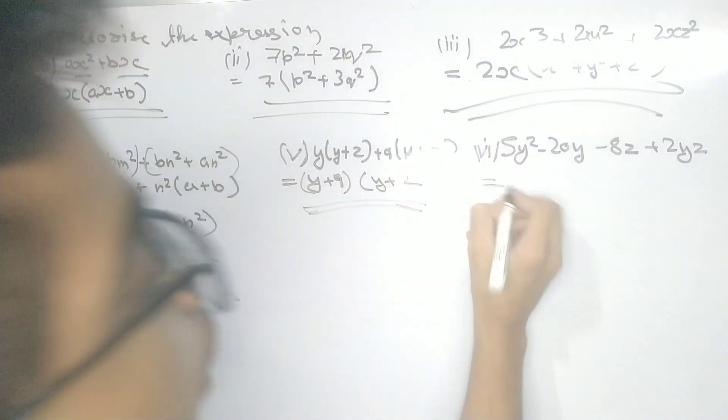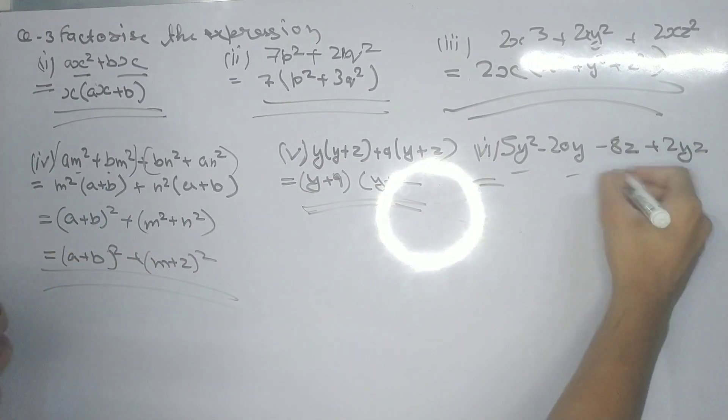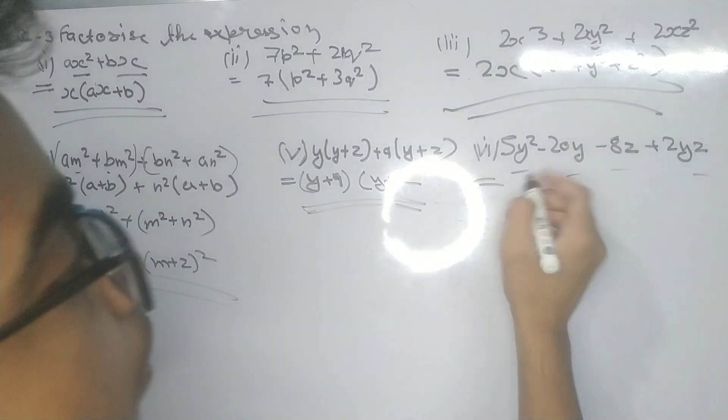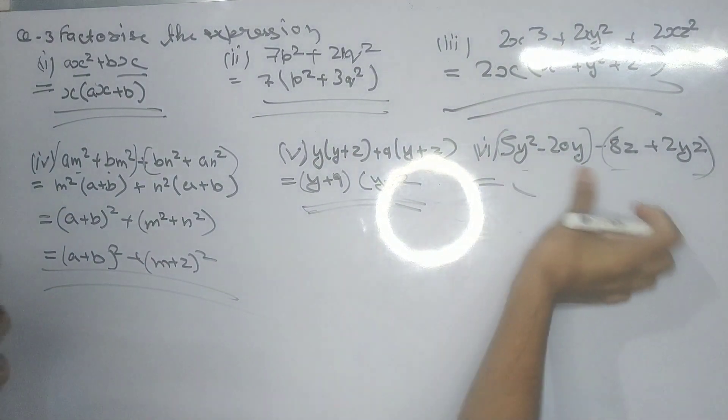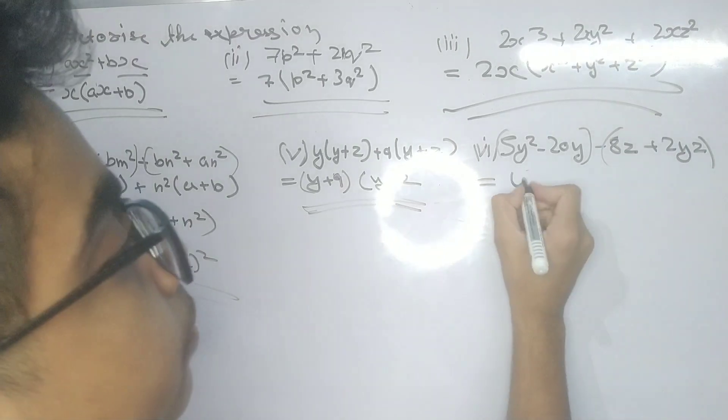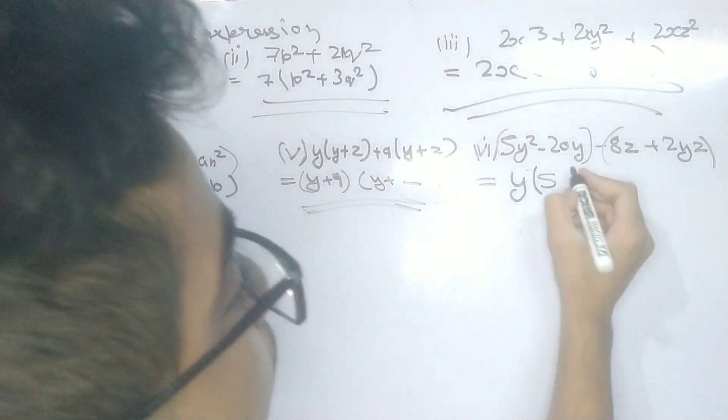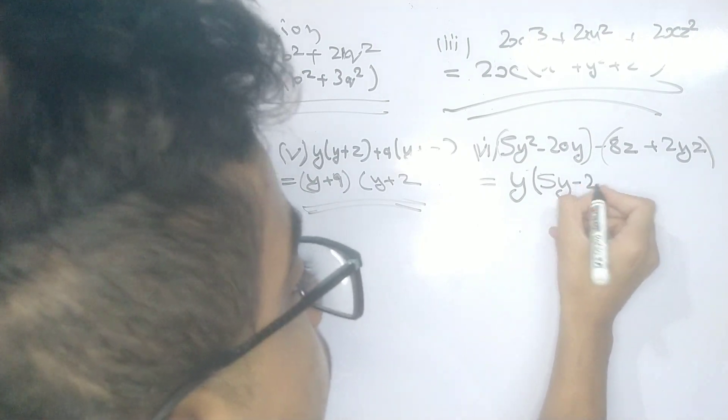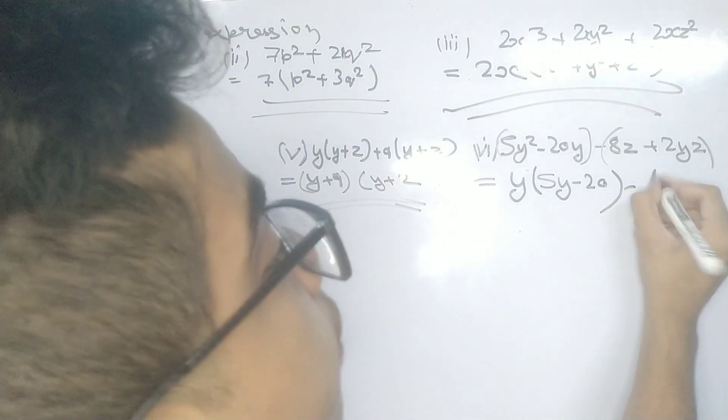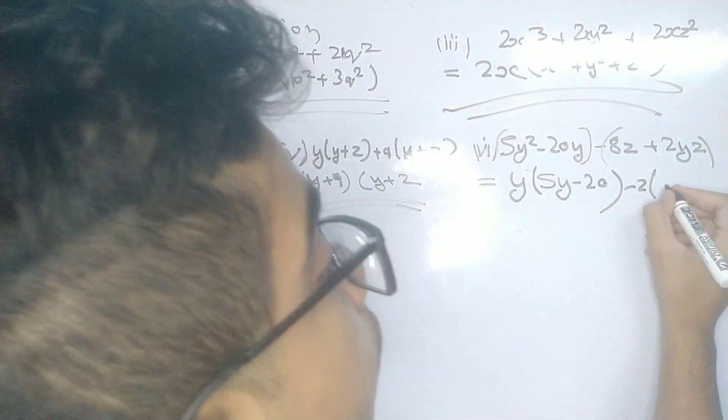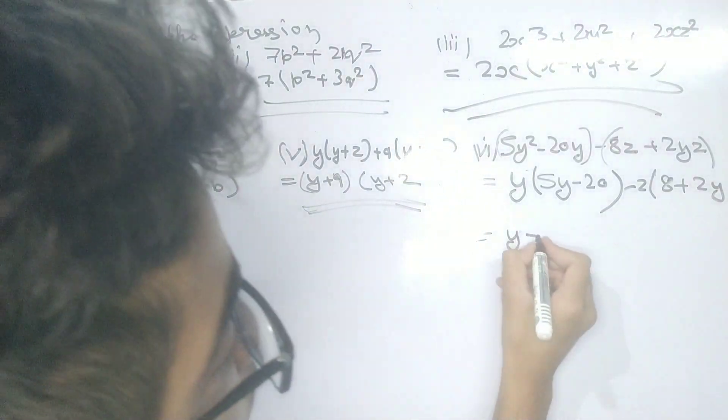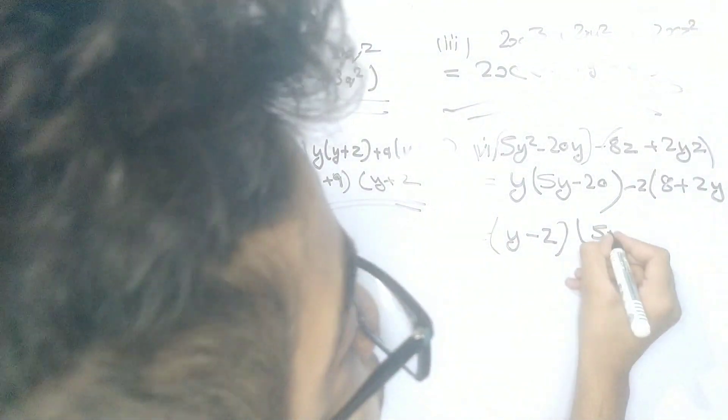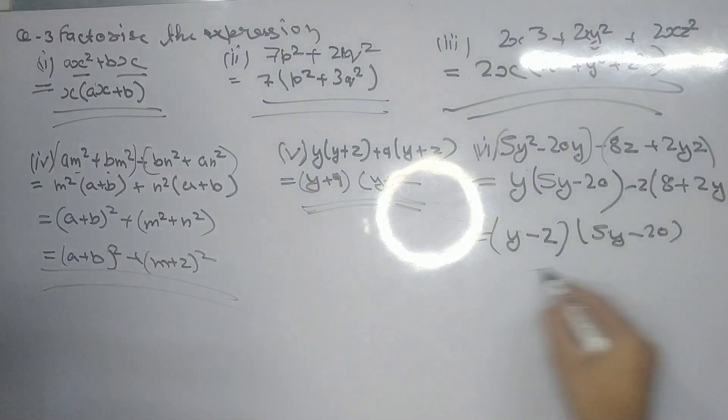Now the sixth part. We have y as common in the first two terms and z as common in the last two terms. We factor them into brackets. We write y times (5y minus 20) minus z times (8 plus 2y). Then we can factor this further as (y minus z) times (5y minus 20). That's all for this part.